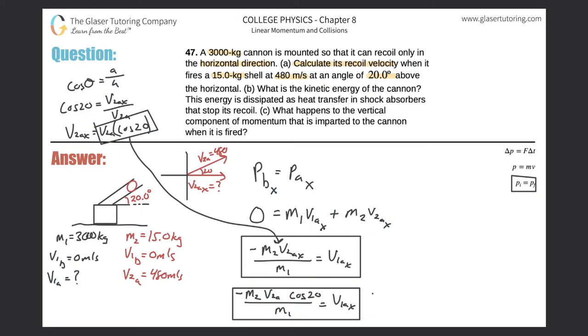So we got V1Ax will be equal to negative M2. So M2 was 15. V2A was 480. Cosine then of 20. All divided by now M1, which was 3000. So V1Ax will be equal to negative 15 times 480 times cosine of 20 all divided by 3000. Negative 2.26 it looks like. Negative 2.26 meters per second.